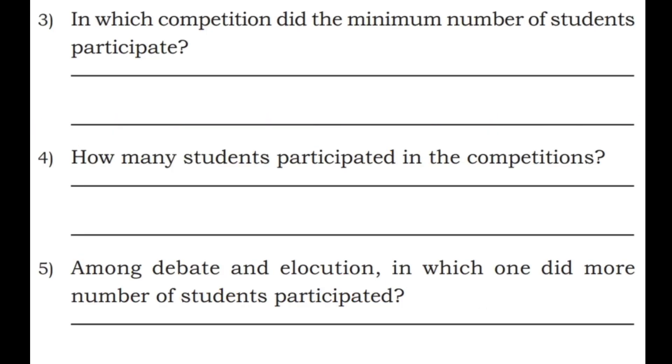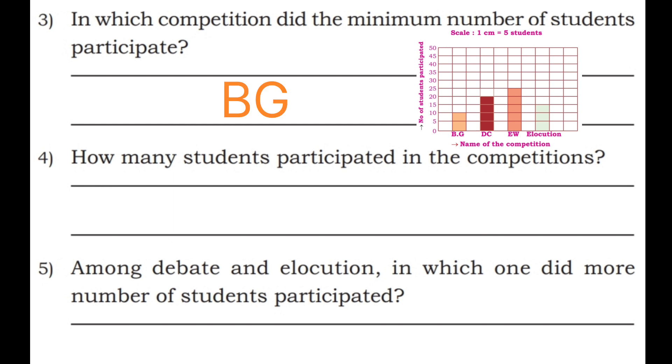In which competition did the minimum number of students participate? Fourth one, how many students participated in the competitions total? Bhava Geethe 10, Debate 20, Essay Writing 25 and Elocution 15. So total 70 students were participated in the competitions. Fifth one, among debate and elocution in which one did more number of students participated? Debate has 20 and elocution 15, so in debate more number of students participated.